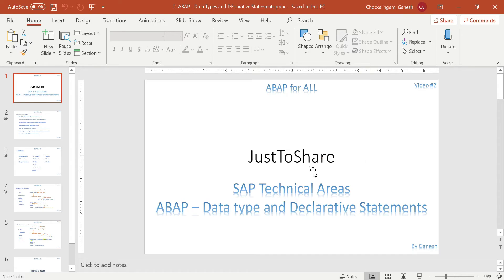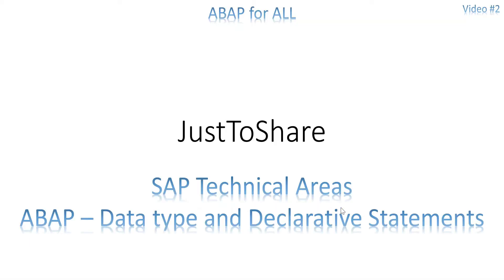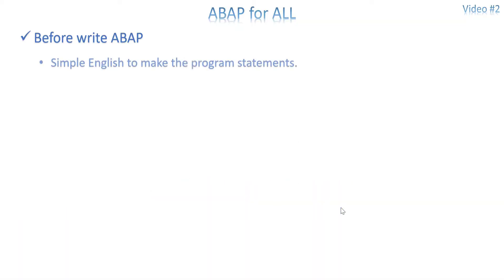Let me list out a few basic things before starting any program. First, ABAP uses simple English to make program statements because ABAP is a fourth generation language — they call it a business language or a common human language. Statements are very simple, like SELECT, LOOP, READ, DO, IF condition, CASE — similar to other languages but more in the form of English.